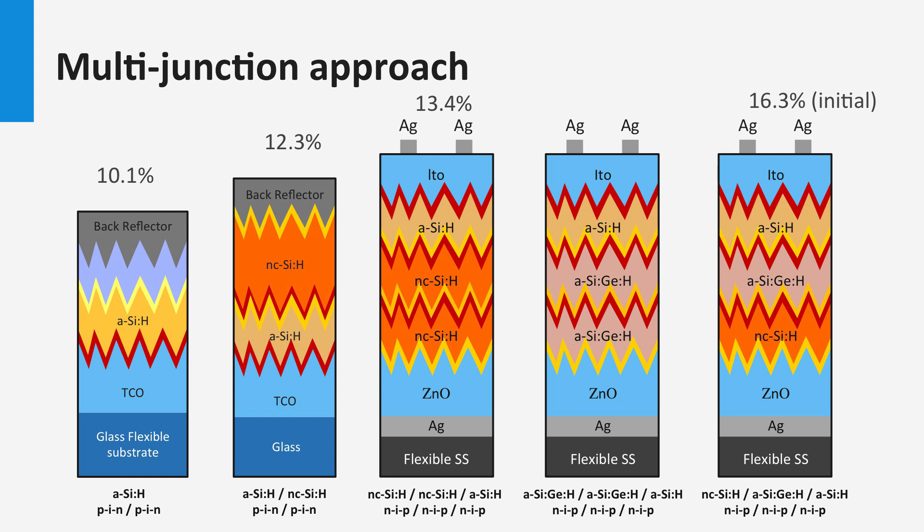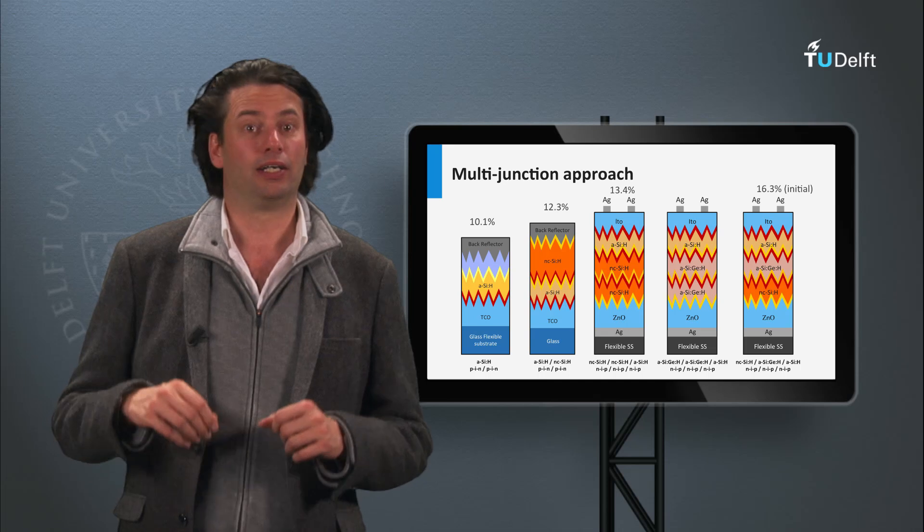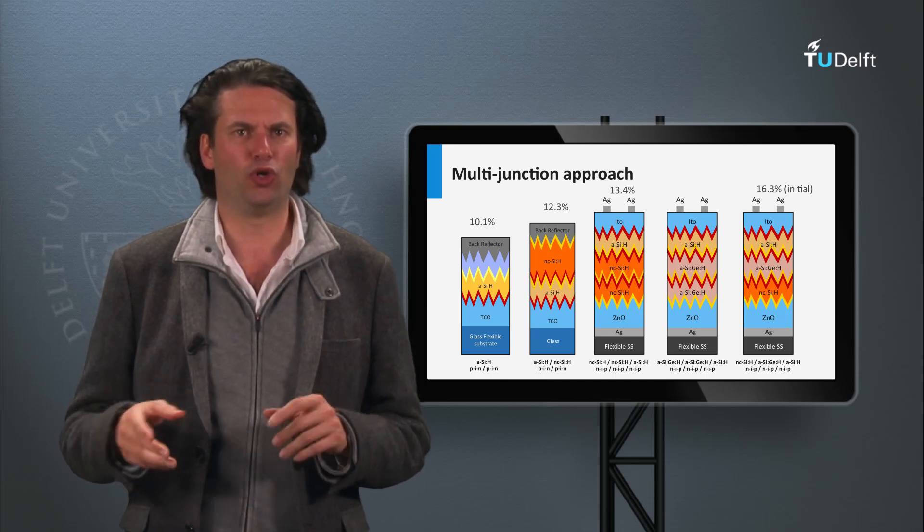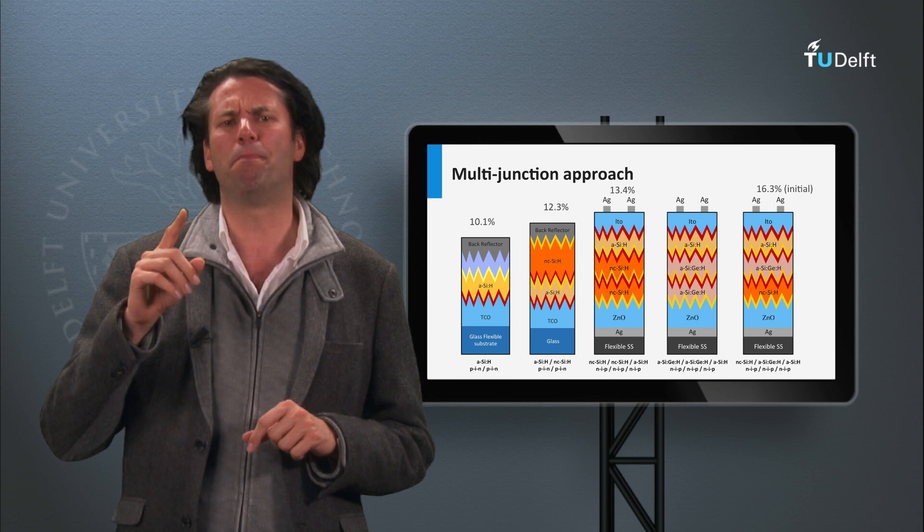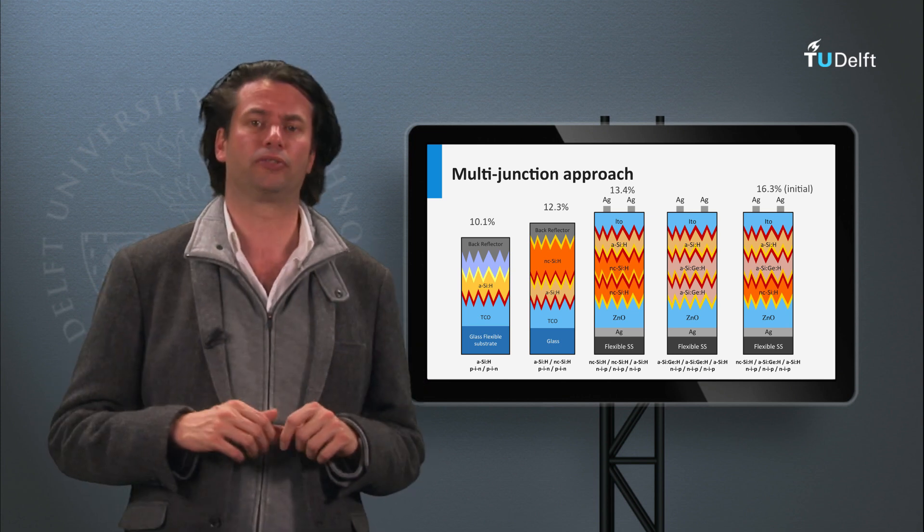However, the stability of the amorphous alloy used in this triple junction is a big issue. The hydrogenated amorphous silicon alloys suffer from light-induced degradation, and stable efficiency drops below that of 13.4% as achieved by the amorphous nano-nano triple junction. The light-induced degradation, also referred to as the Staebler-Wronski effect, is one of the biggest challenges for thin film solar cells.